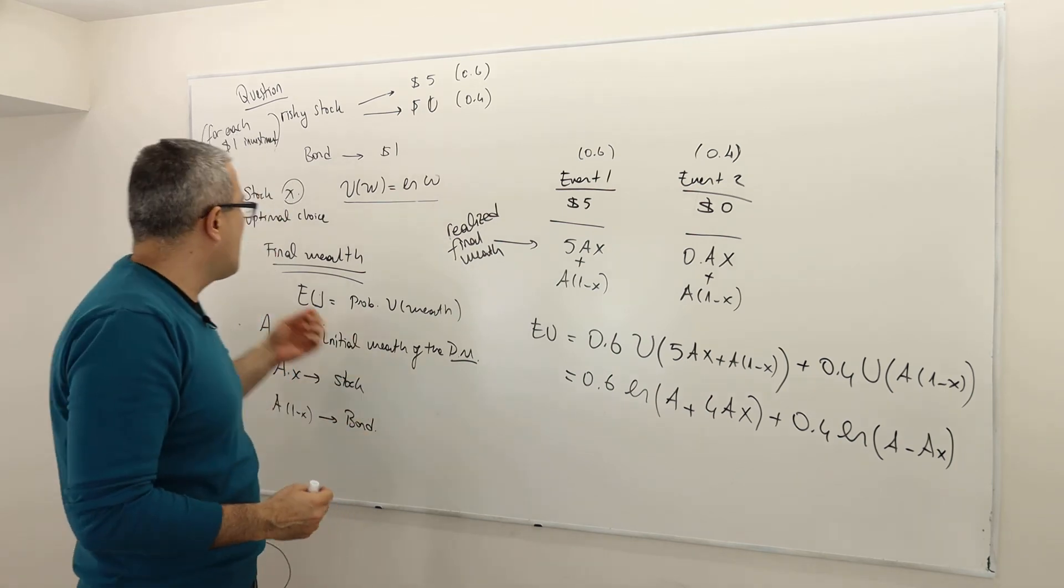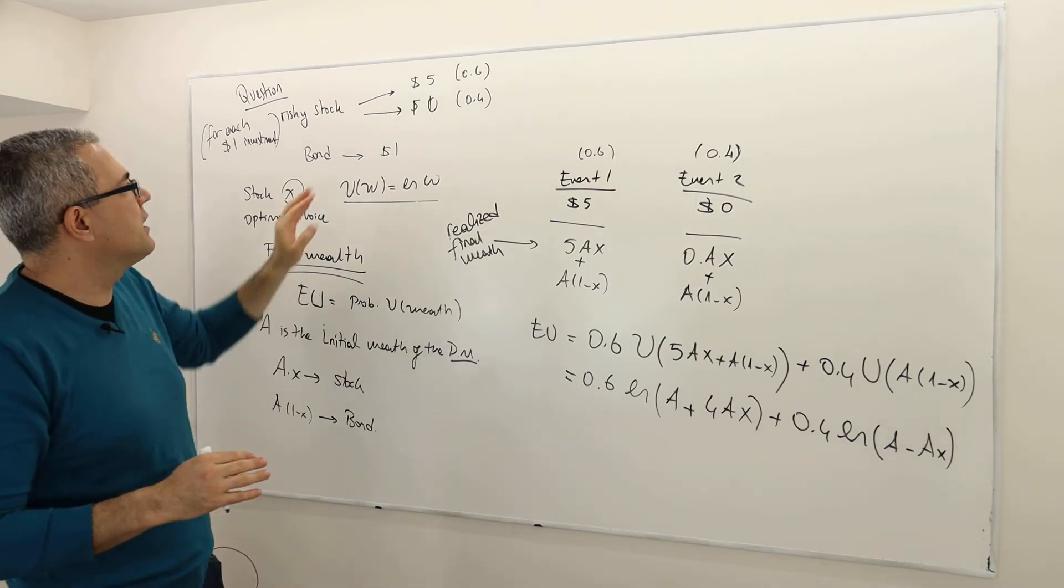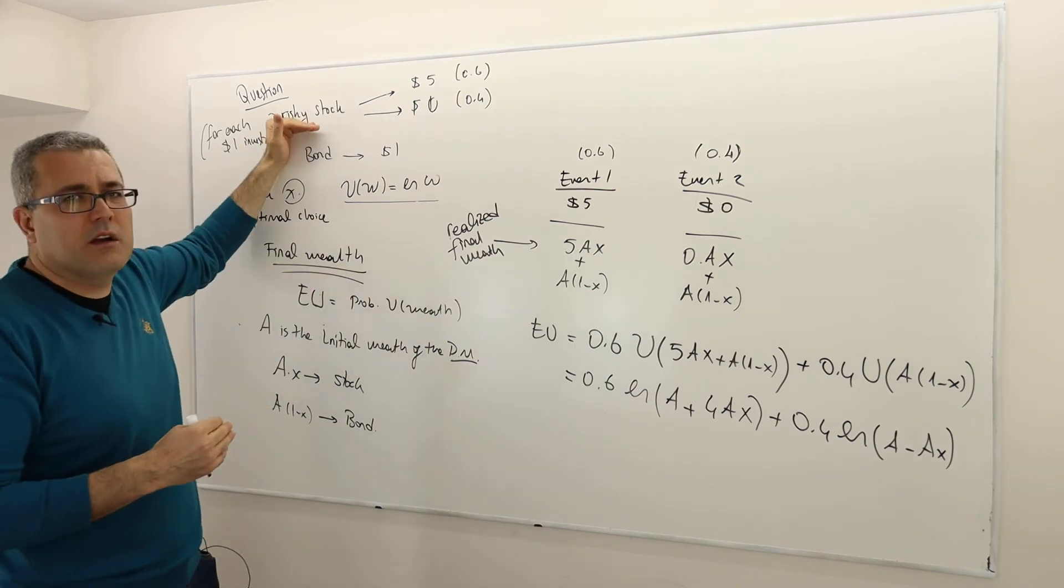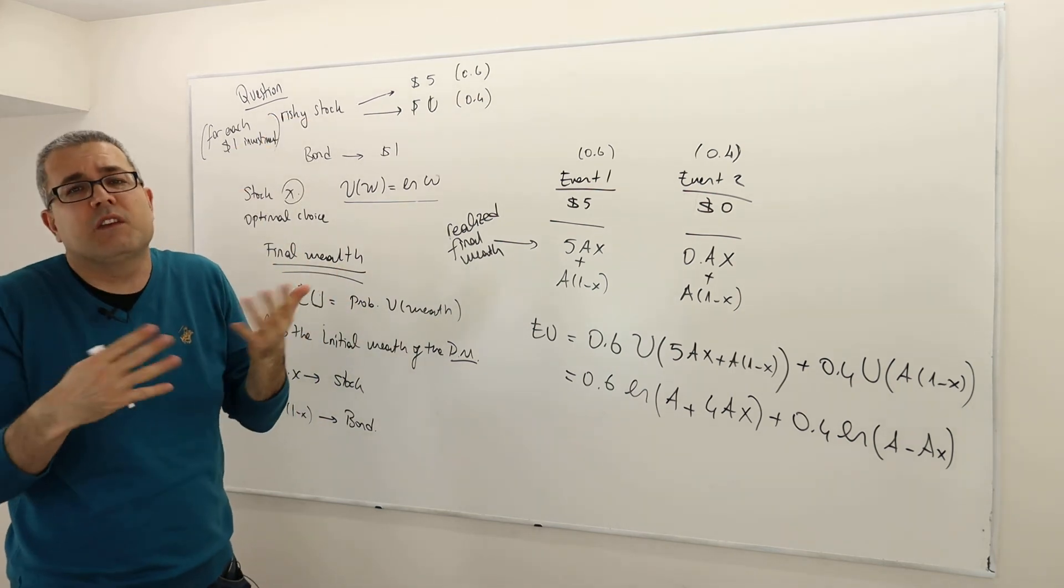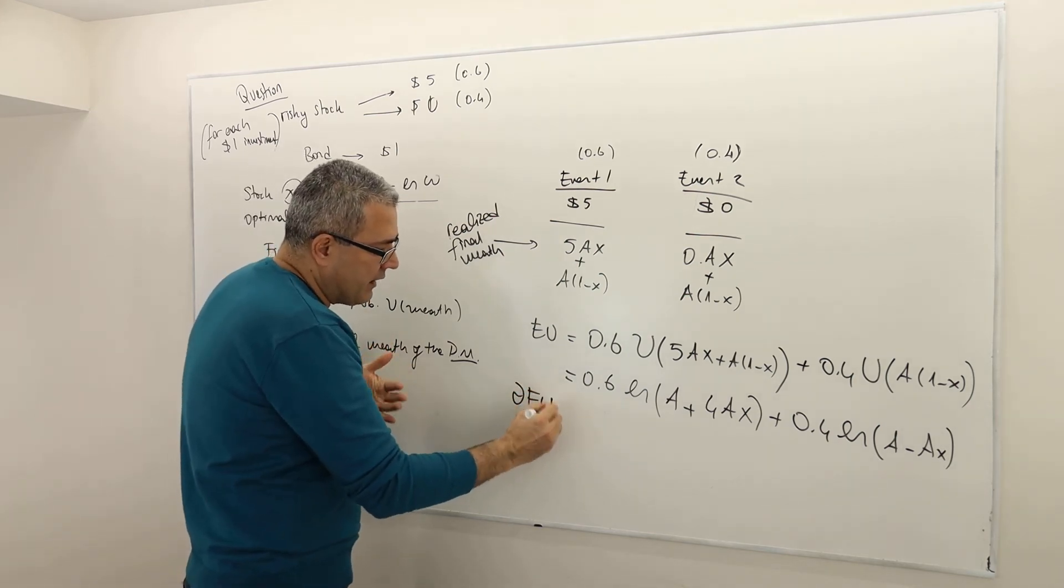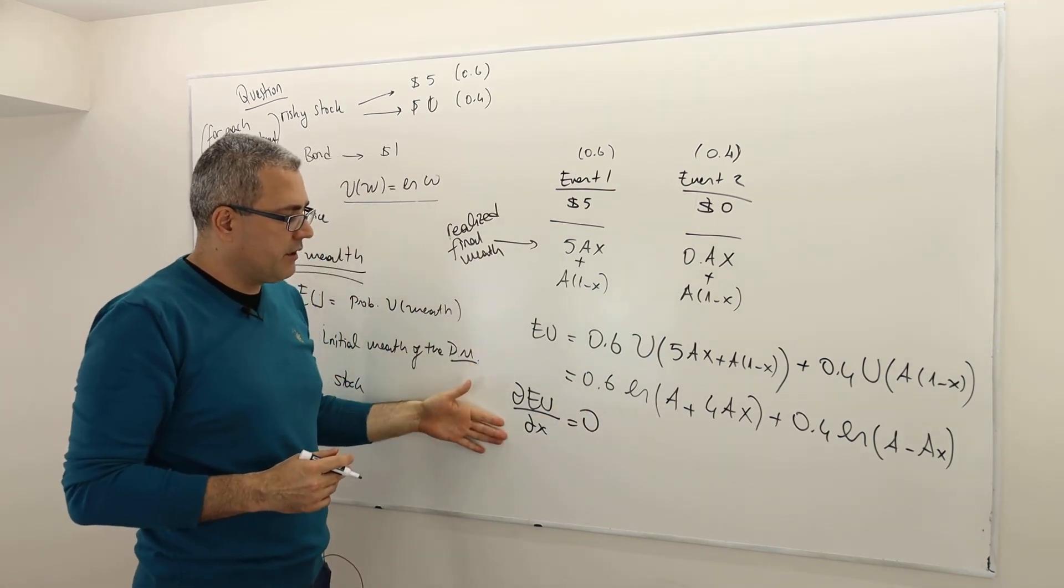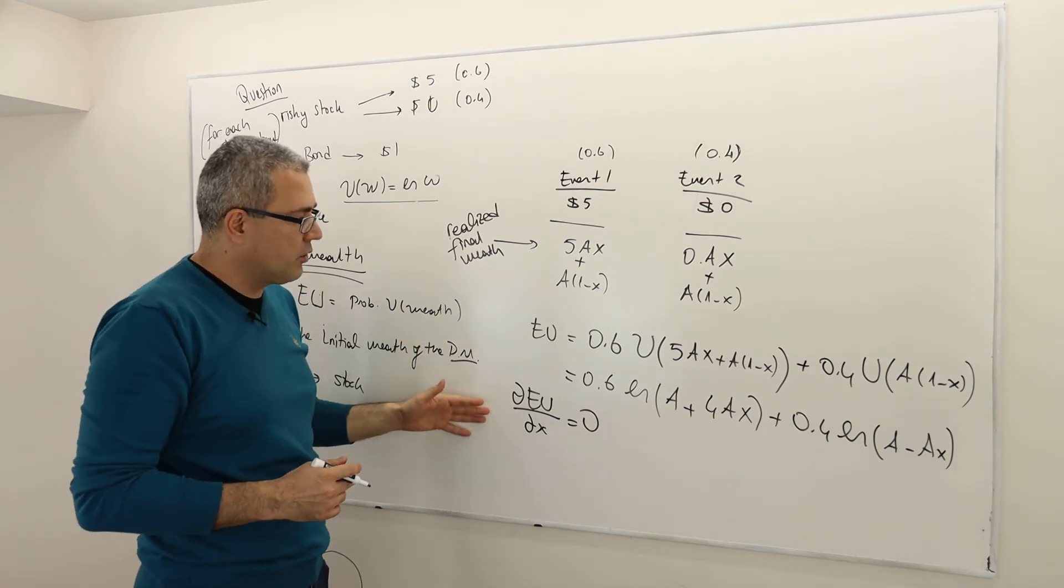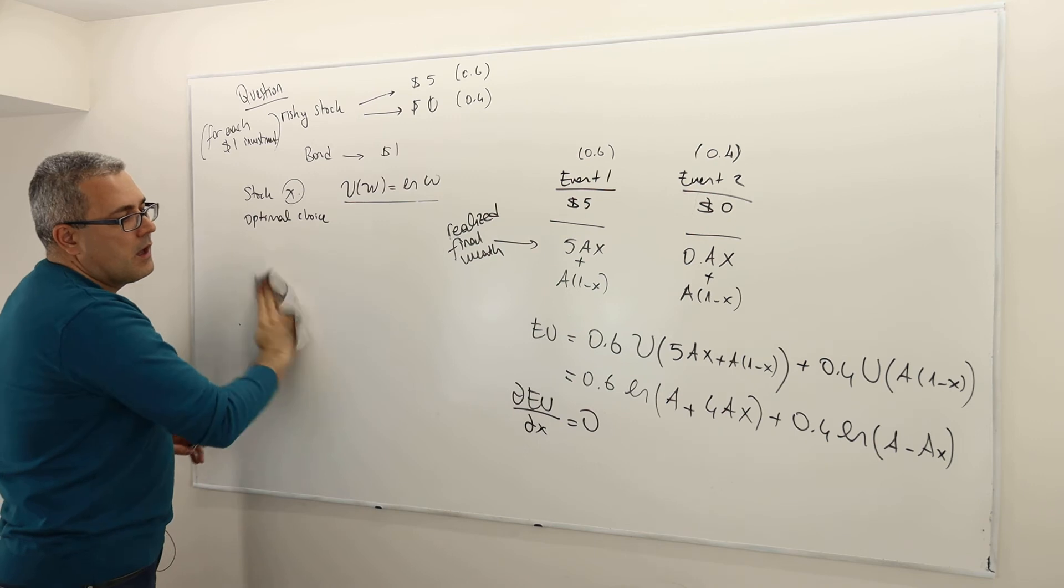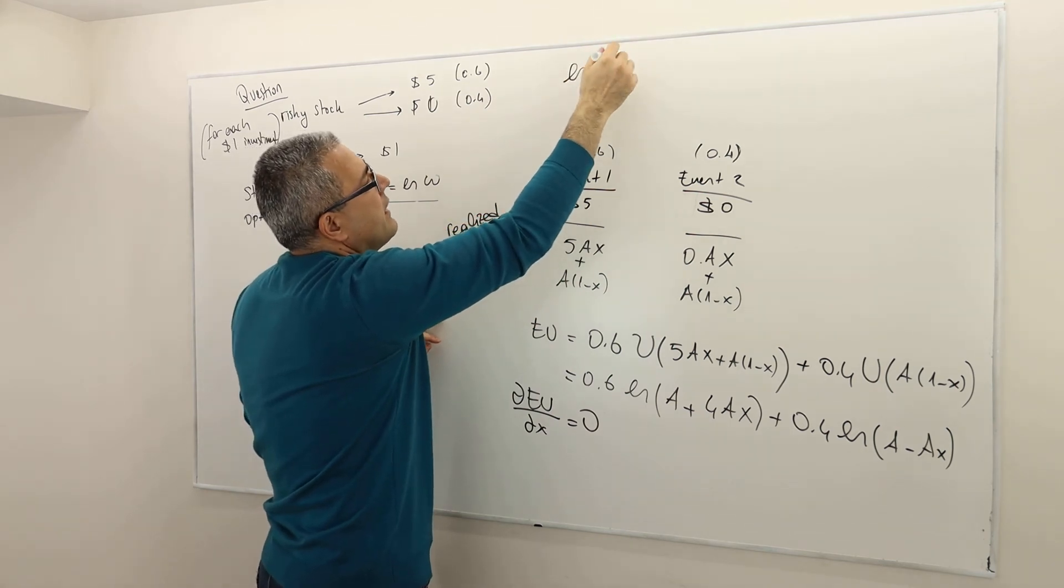The question was what is the optimal X for this decision maker. Maybe he will prefer to invest his entire money on bond, which means X equals zero, or invest his entire money on stock, meaning X equals one, or maybe X is somewhere in between. How do we find the optimal X? Simple. It's the X that maximizes the expected utility, meaning you have to solve the first order condition. Take the partial derivative with respect to expected utility with respect to X, set it equal to zero, and solve for X.